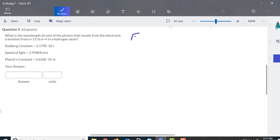So the first thing we'll do is find the energy, and that'll be 2.179 times 10 to the negative 18 joules, 1 over N1 squared minus 1 over N2 squared.